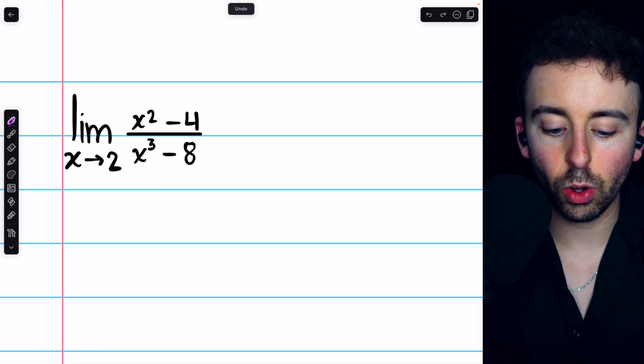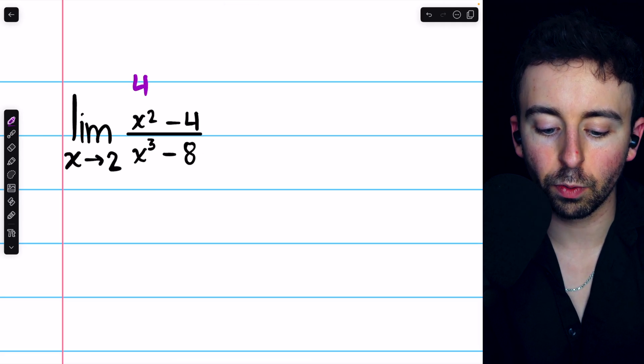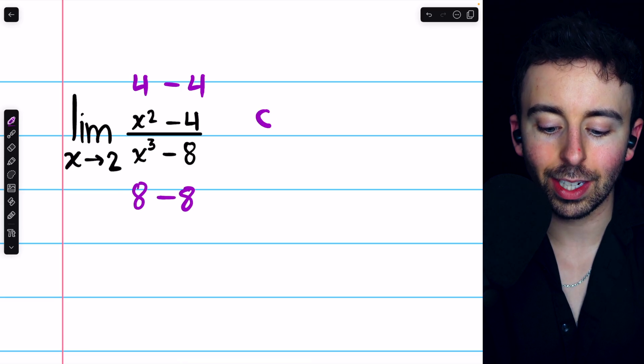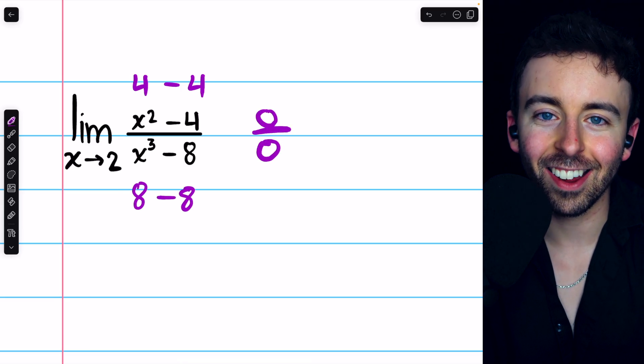If we tried to plug in x equals 2, we would get 2 squared, which is 4, minus 4, over 2 cubed, which is 8, minus 8. We'd get 0 over 0, and that's not going to work.